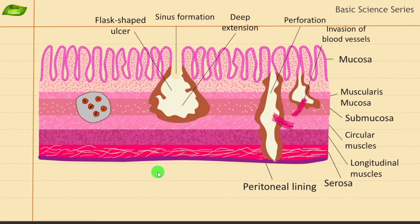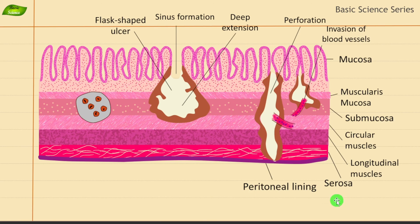Entamoeba histolytica has many virulence factors. It has the amoebic lectin antigen and contains various enzymes like cysteine proteases that can cause damage to the intestine. It also has collagenases that cleave collagen in the muscles. Hydrolytic enzymes, proteases, phosphatases, and RNases are also known to cause destruction to the tissue. Metallocollagenases, neuraminidases, and amidases are also present. We can discuss all these virulence factors in detail in my next video.